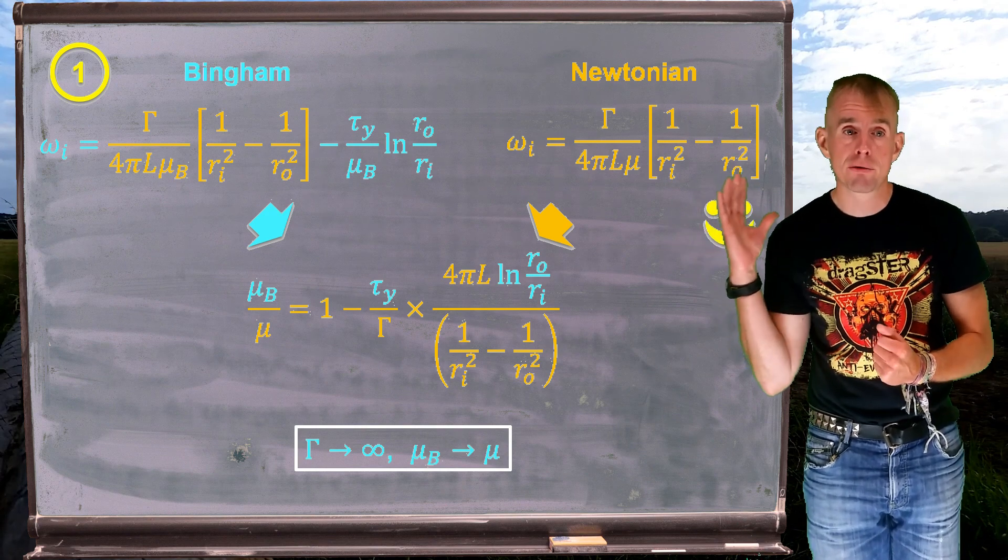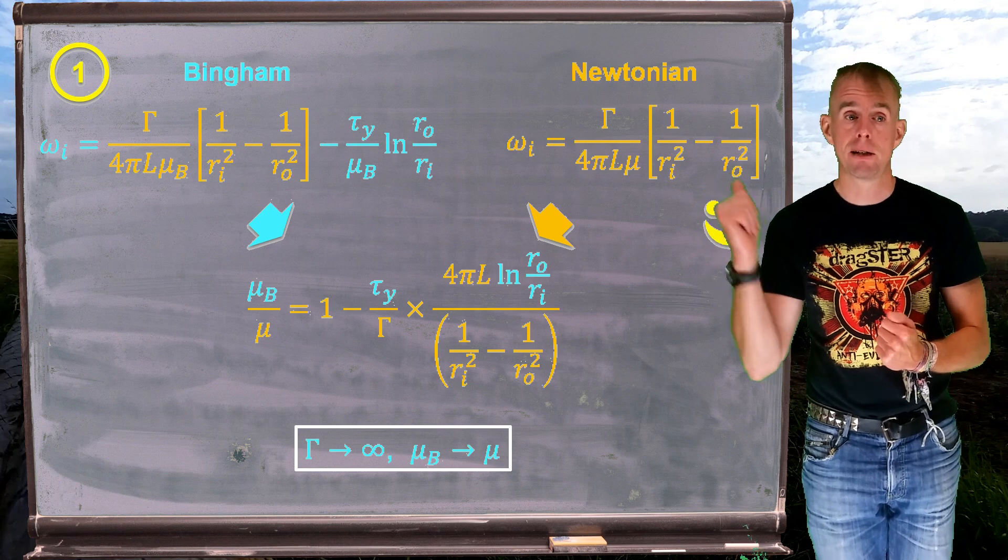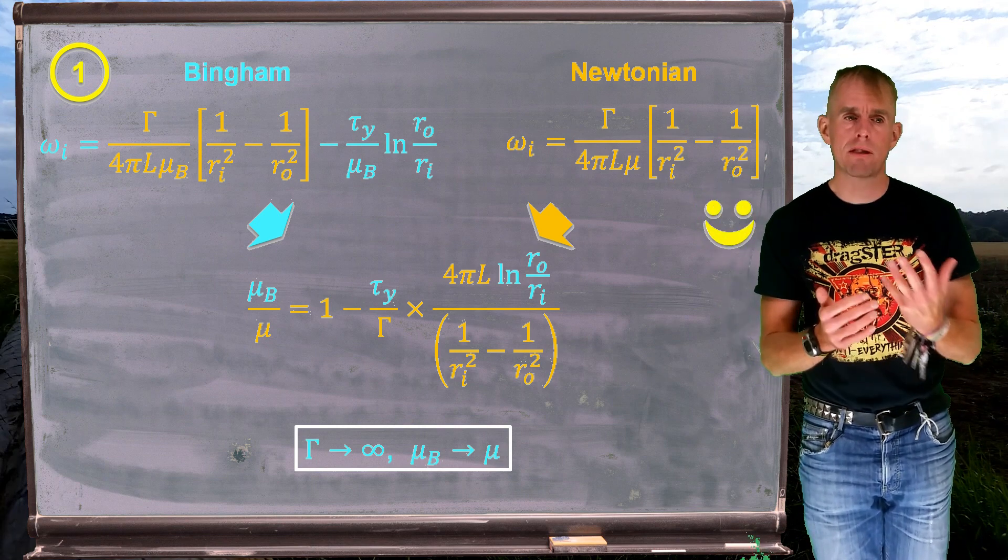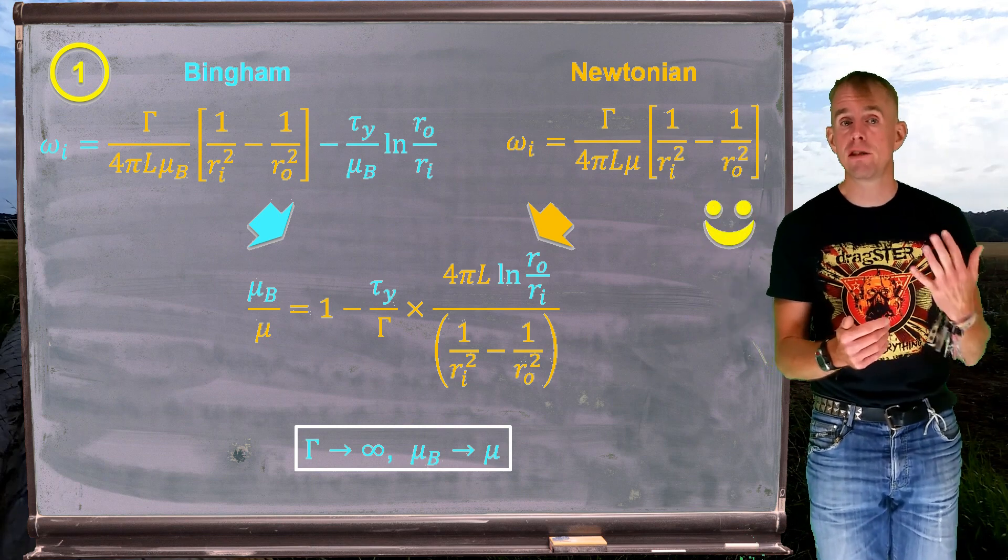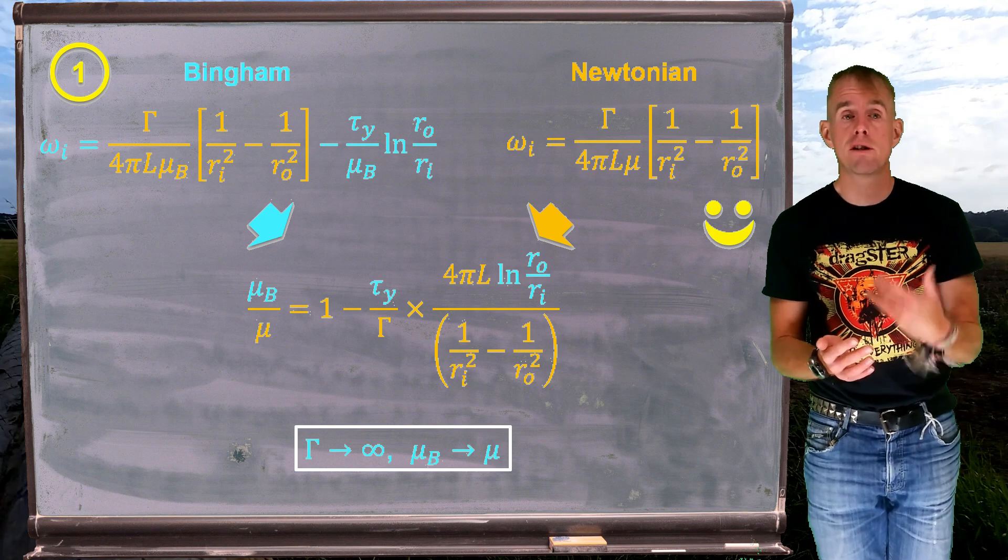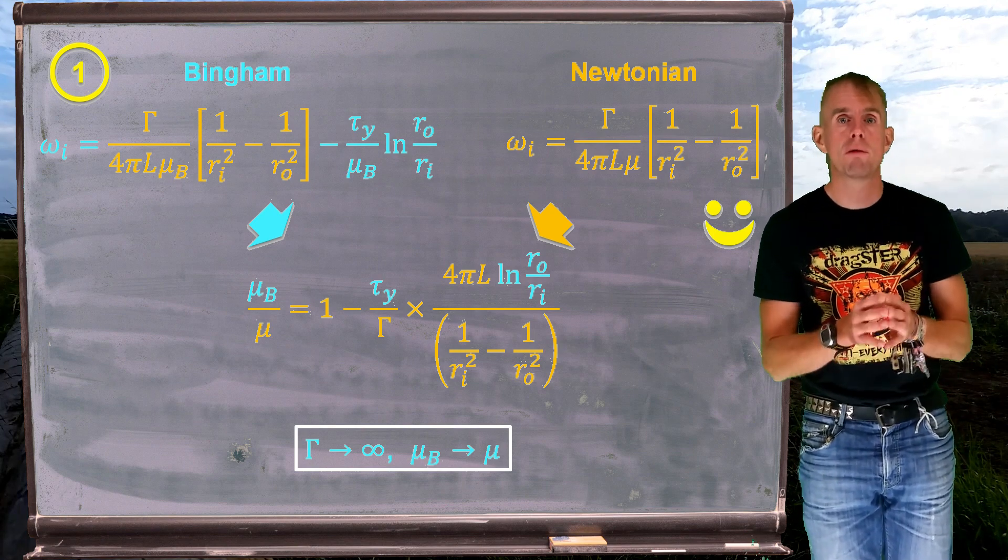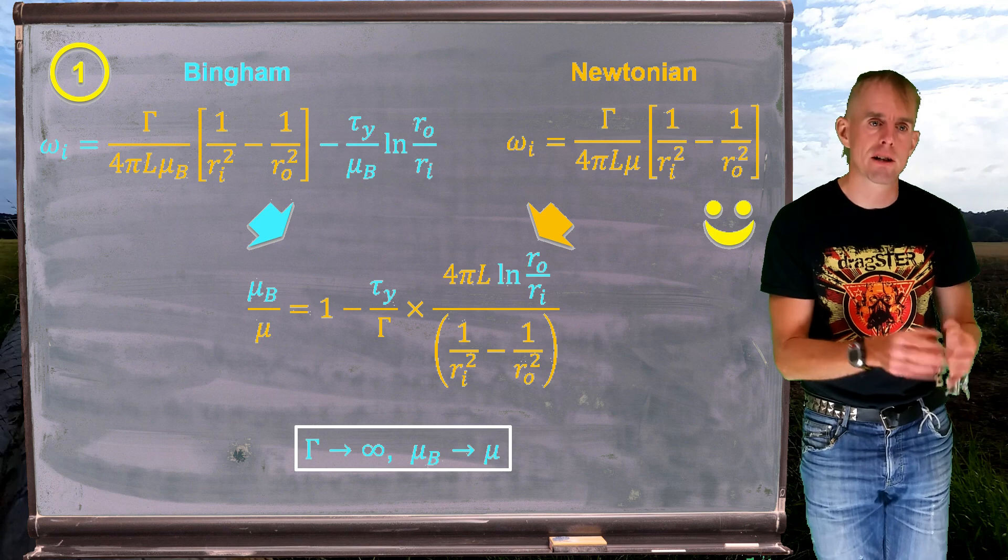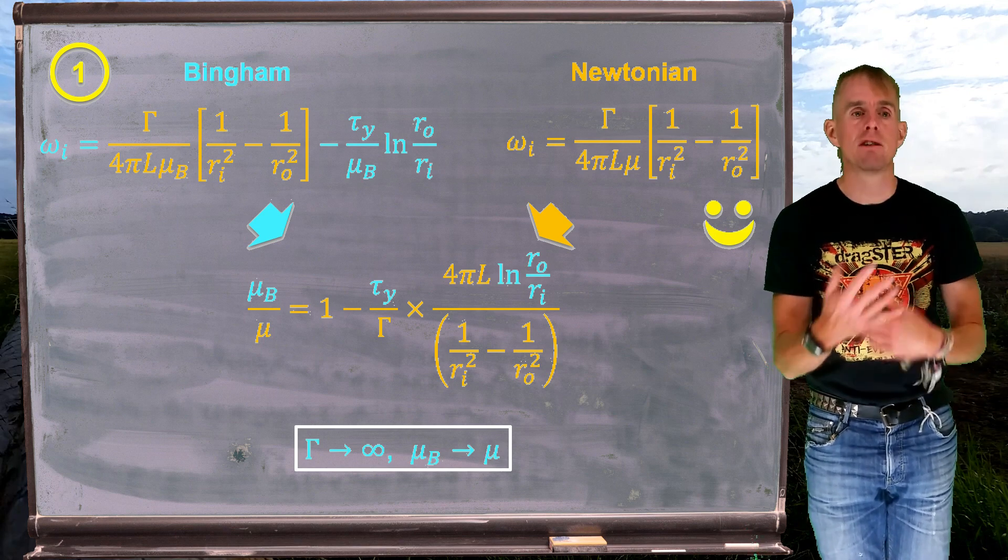So what this means is that as the torque in the Couette system gets higher and higher and higher, 1 over gamma gets smaller and smaller and smaller. Therefore, that second group of terms on the right-hand side disappears. Then we're left with mu b is effectively equal to mu. So it's the Newtonian result, which is exactly what we saw in pipe flow at high shear rate. So again, everything is consistent.